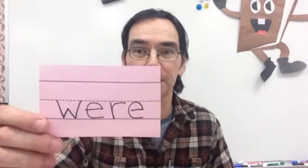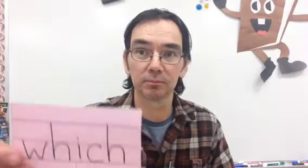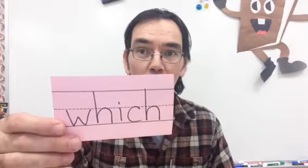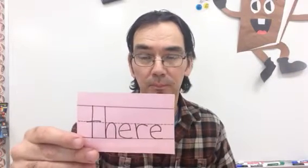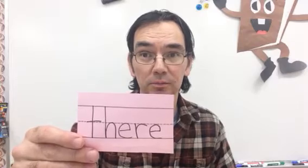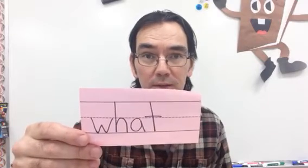We're going to get going with our sight word cards. I'm going to hold it up — when you know it, say it. You can always go back and practice again, or you can make your own cards and practice anytime. Here we go: number one — 'were.' Next — 'which.' 'When.' 'There.' 'What.'